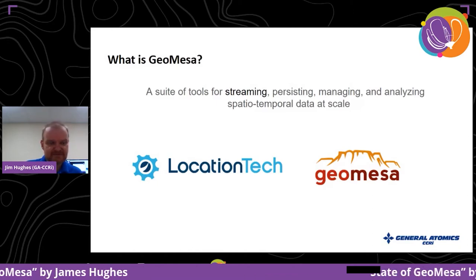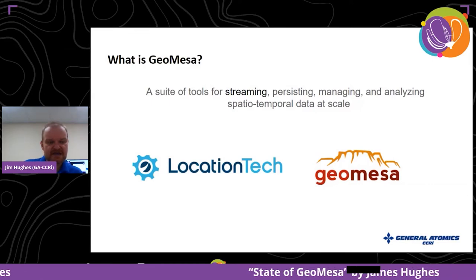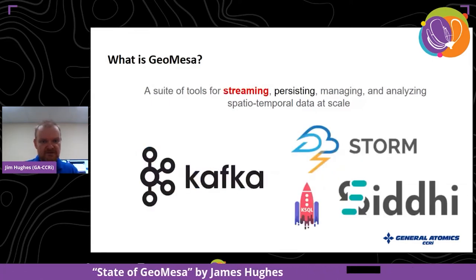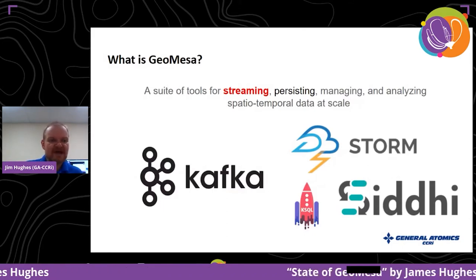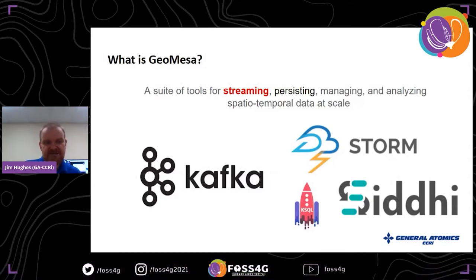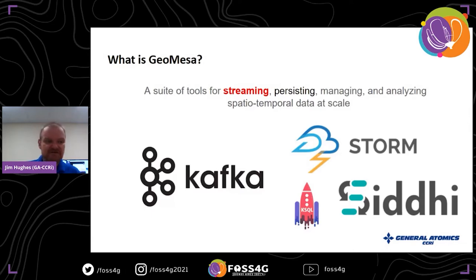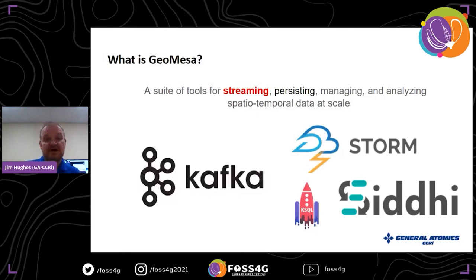The first of those four pillars is streaming. GeoMesa integrates with Apache Kafka for message transportation. We don't have as much open source on the streaming analytics side — that's really where the state of the art is. Over the years we've worked with technologies like Storm and Flink, and we're now looking at what we can do with Kafka Streams and ksqlDB for geospatial processing.